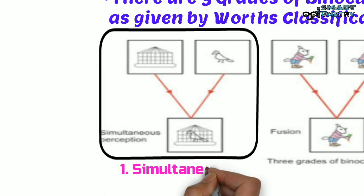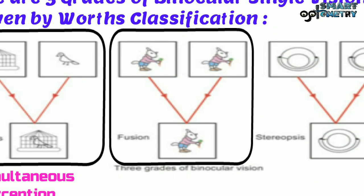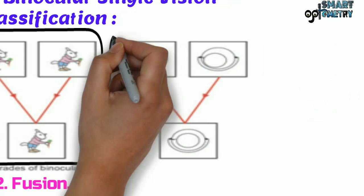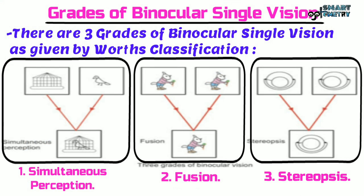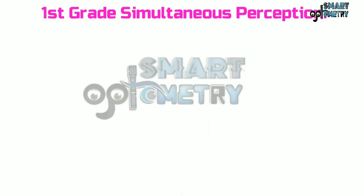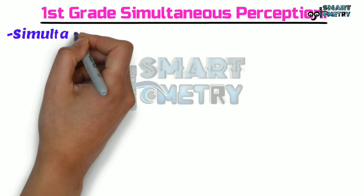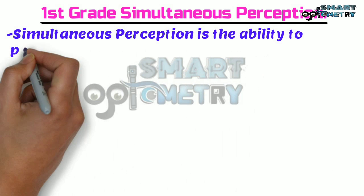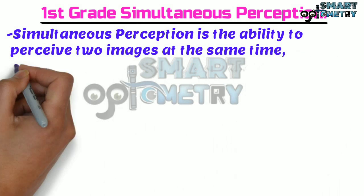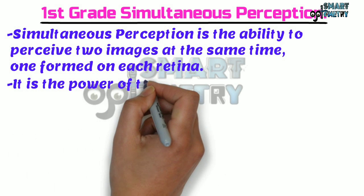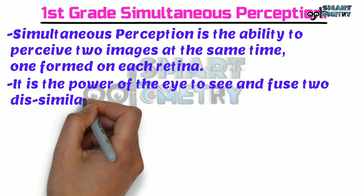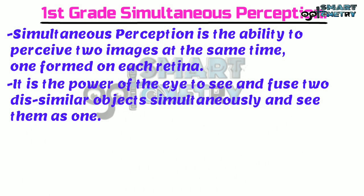First is simultaneous perception. Grade 1: Simultaneous Perception. Simultaneous perception is the ability to perceive two images at the same time, one formed on each retina. It is the power of the eye to see and fuse two dissimilar objects simultaneously and see them as one.